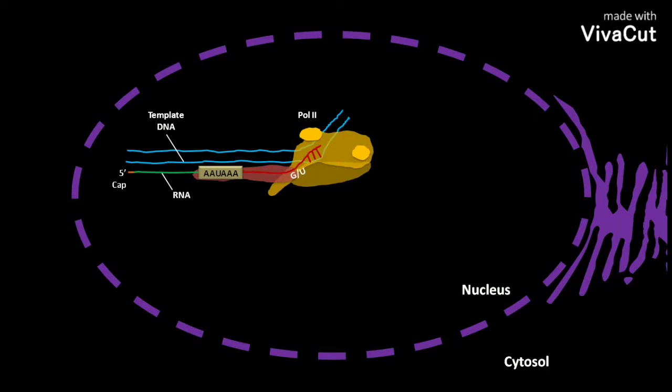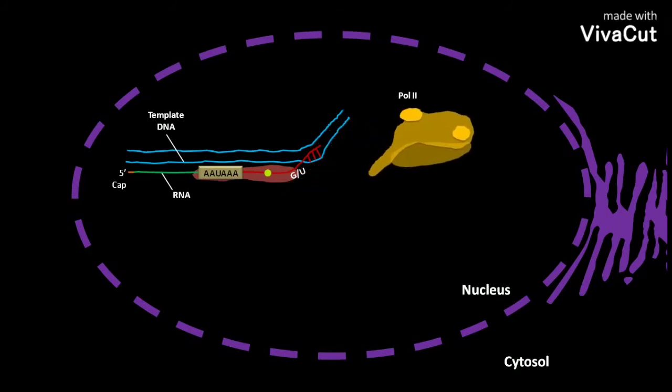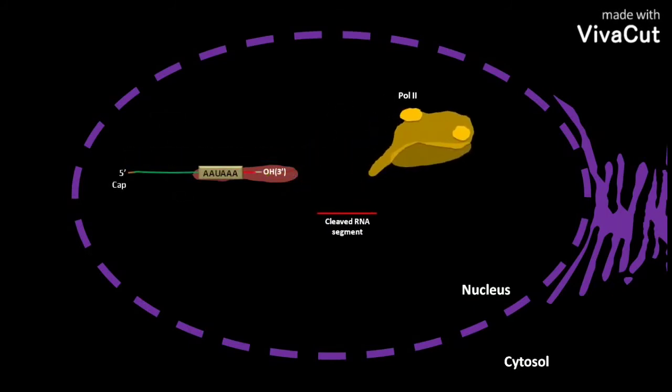Then the RNA is cleaved by endonuclease at the point 10 to 35 nucleotides downstream to the AAUAAA sequence. Here the cleavage point is represented as the blinking dot. The cleavage produces a 3' hydroxyl group and a cleaved RNA segment.